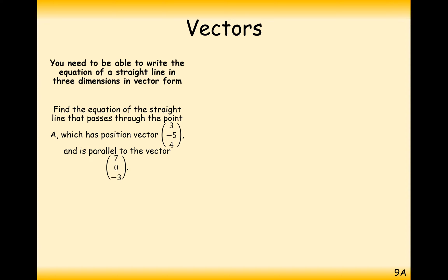Let's have a go at answering questions about the equation of a straight line r equals a plus lambda b. When we write these down, we put underlines beneath a and b but not lambda. The underline effectively notates bold handwriting that we can't write with a pencil. So we write a or b as underlined when they are vectors.